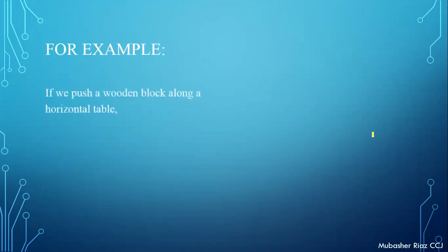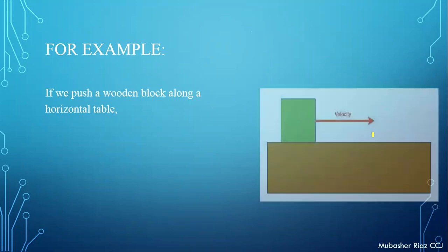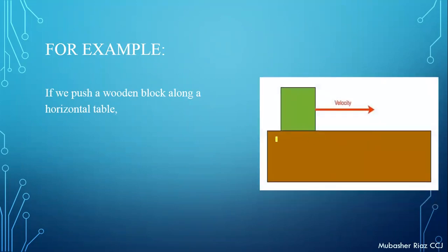For example, if you push a wooden block along a horizontal table as shown in the figure — this is the table top surface and there is a wooden block. You push this wooden block rightward, it starts moving. You note that it will eventually come to rest. You push this block and this block moves, but at the end this block comes to rest.